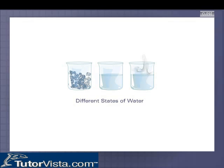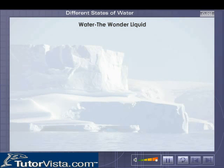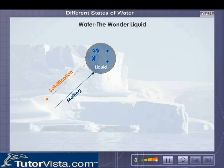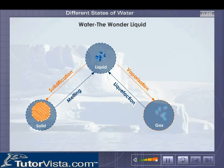Different States of Water. Water exists in three physical states: solid, liquid, and gaseous. Ordinarily, water is in the liquid state, but on freezing it forms ice, which is solid. Water vapor and steam are the gaseous forms of water.